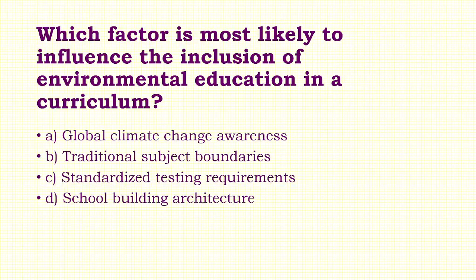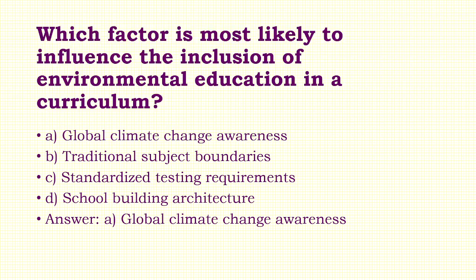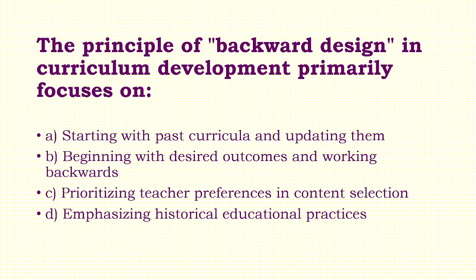Question 11: Which factor is most likely to influence the inclusion of environmental education in a curriculum? Options: A) Global Climate Change Awareness, B) Traditional Subject Boundaries, C) Standardized Testing Requirements, D) School Building Architecture. Answer: Option A — Global Climate Change Awareness.